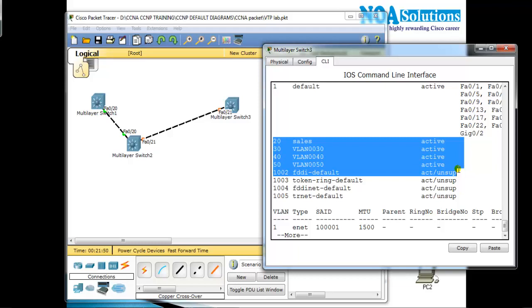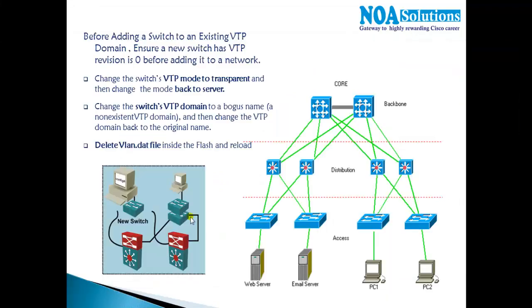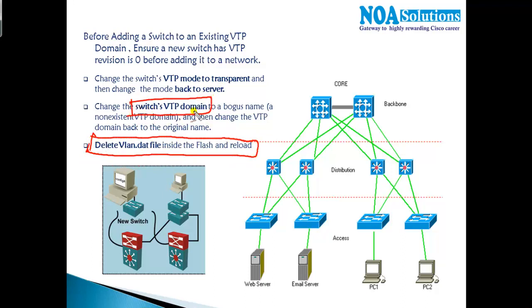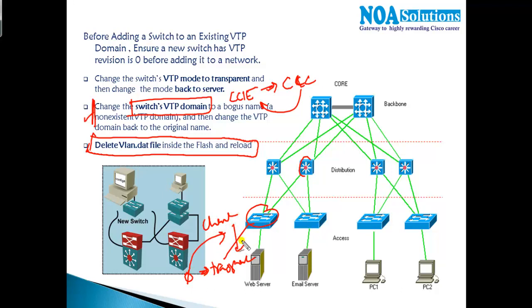These are the key things to keep in mind when troubleshooting or adding a new switch to a VTP domain: ensure the revision number is zero. To do this: delete the vlan.dat file and reload the device. Alternatively, you can change the domain name to something else and then change it back — that also resets the revision number. Or, change the switch to transparent mode (which always has revision number zero) and then back to client mode. Note that the domain-name and transparent-mode methods only modify the vlan.dat file rather than deleting it, so if you want a completely clean start, the delete vlan.dat method is preferred.